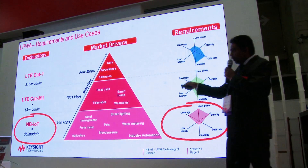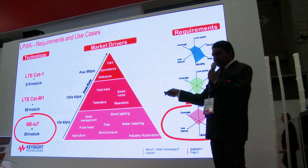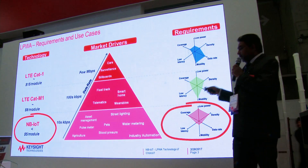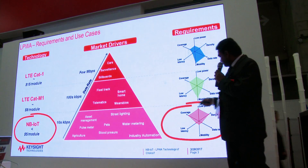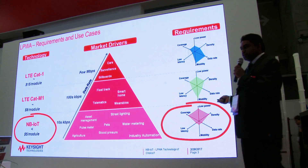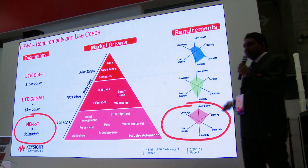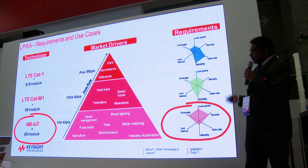If you look at the bottom of the pyramid, you can see NB-IoT. NB-IoT has a number of requirements like low power, wide area coverage, high density, and low data rate. These requirements drive use cases like asset management and smart metering.